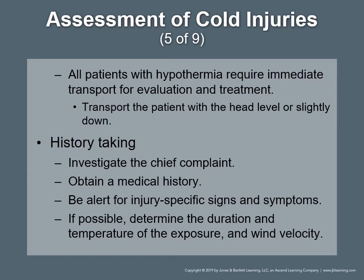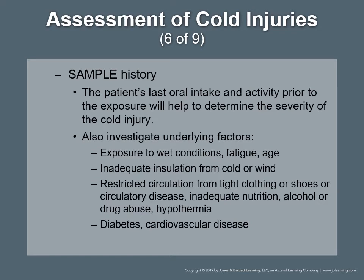History taking: investigate the chief complaint and obtain a medical history. Be alert for injury-specific signs and symptoms as well as pertinent negatives. If possible, determine the duration of exposure, the temperature to which the body part was exposed, and the wind velocity. The sample history provides important information affecting both field treatment and hospital treatment. Investigate underlying factors including wet conditions, inadequate insulation, restricted circulation from tight clothing or circulatory disease, fatigue, inadequate nutrition, alcohol or drug abuse, hypothermia, diabetes, cardiovascular disease, and age.